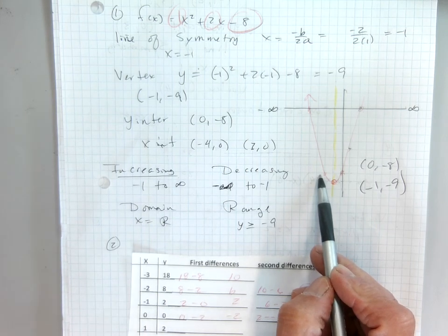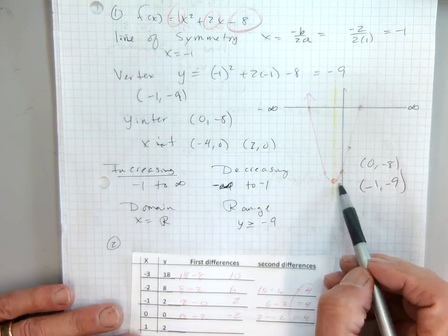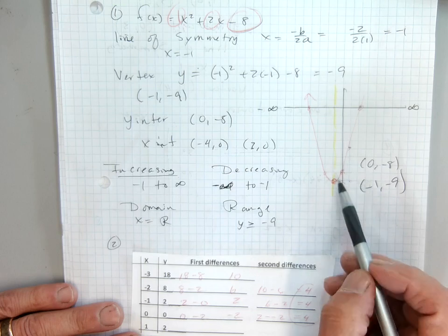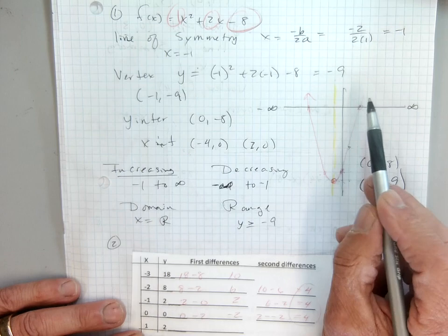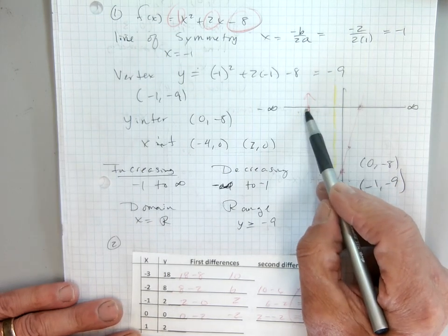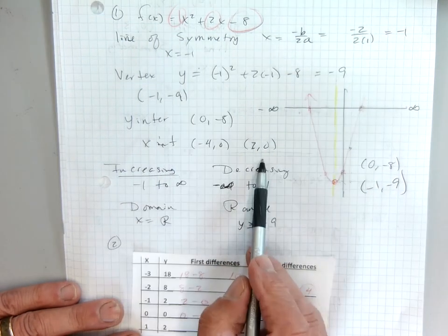How do I get the x-intercepts? Well, I know that if I do my factoring that it would hit here at positive 2, and if I reflect it over, it hits also at negative 4. So those are my x-intercepts.